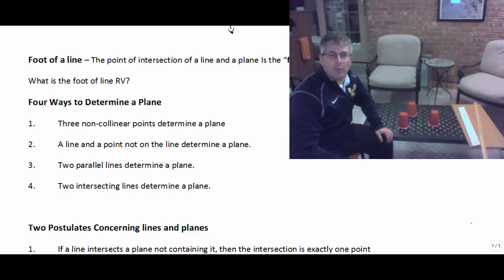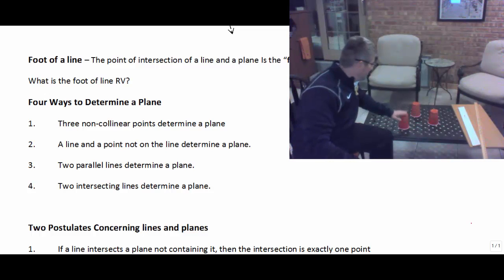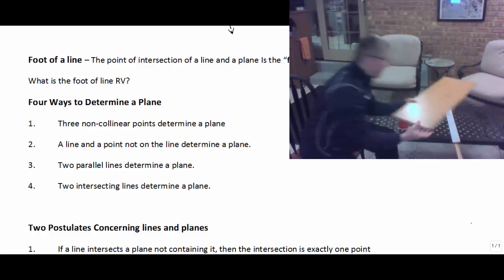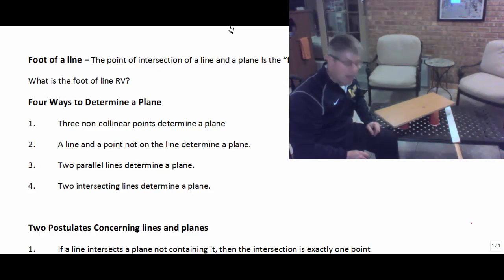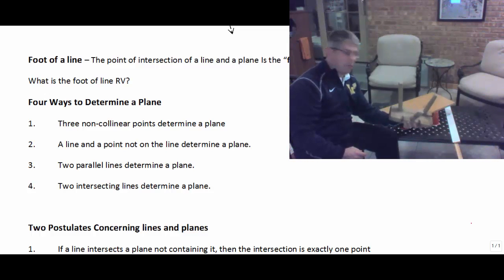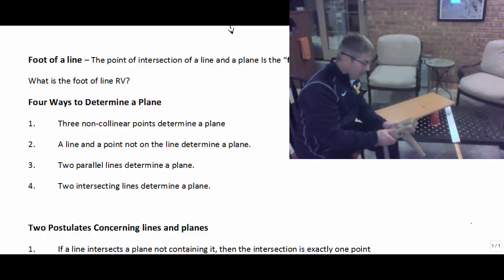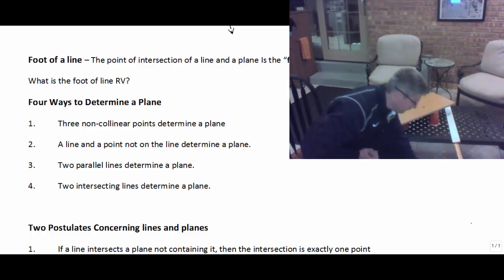Three non-collinear points will determine a plane. If we imagine our three cups here, the tops of those each being its own point, we could set our plane on there. Those three points will determine a plane. That's why I have the milking stool in the classroom. The milking stool is our example of three points that determine a plane. Farmers use the three-legged stool because when they went to milk cows, the ground wasn't always level, but those three points would always find their own plane, no matter how uneven the ground was.